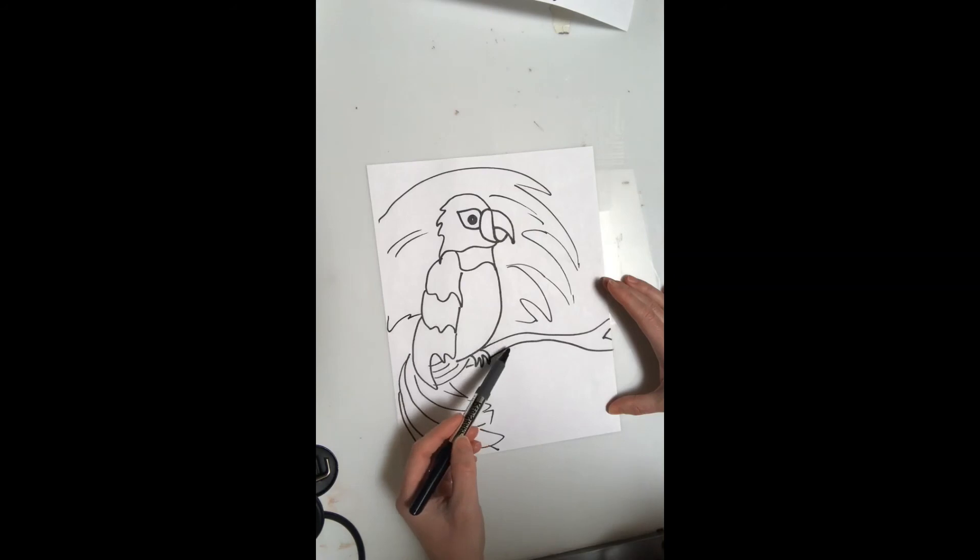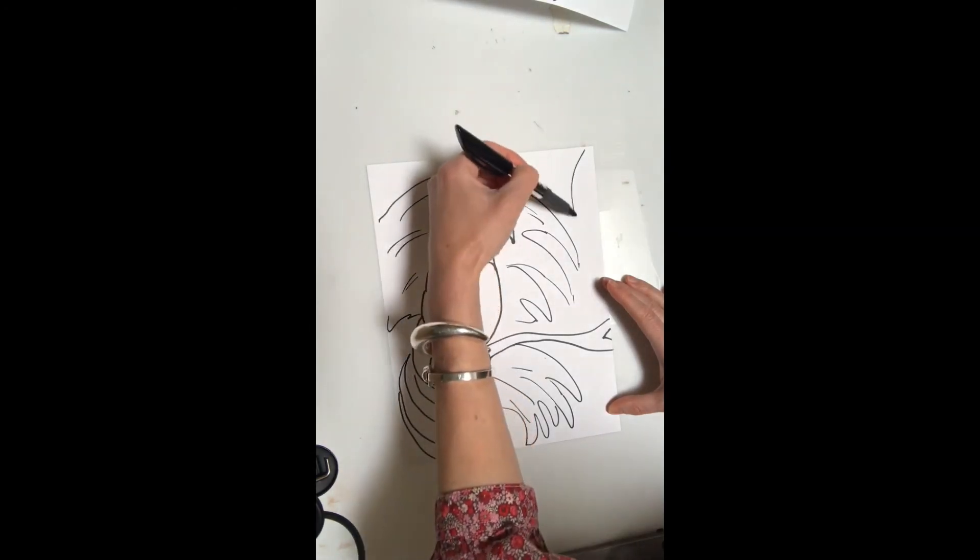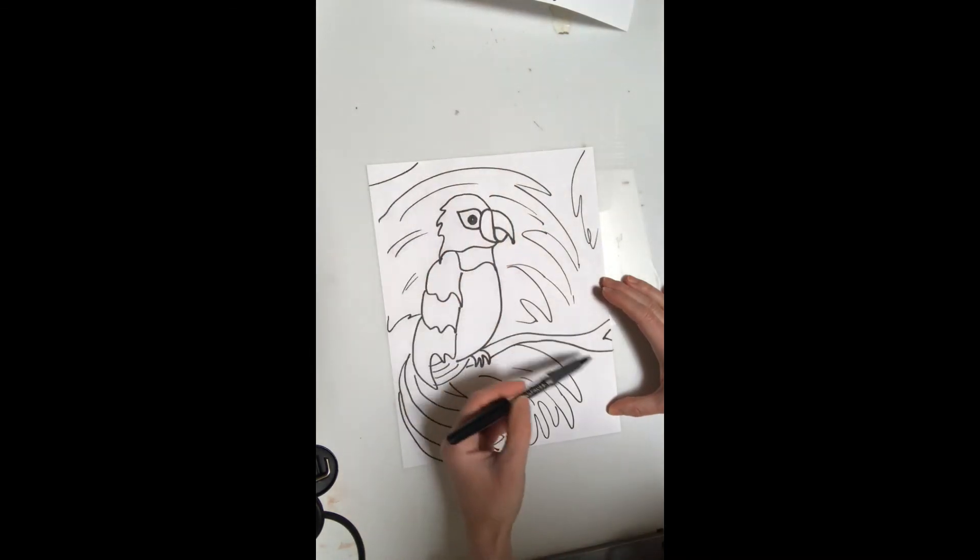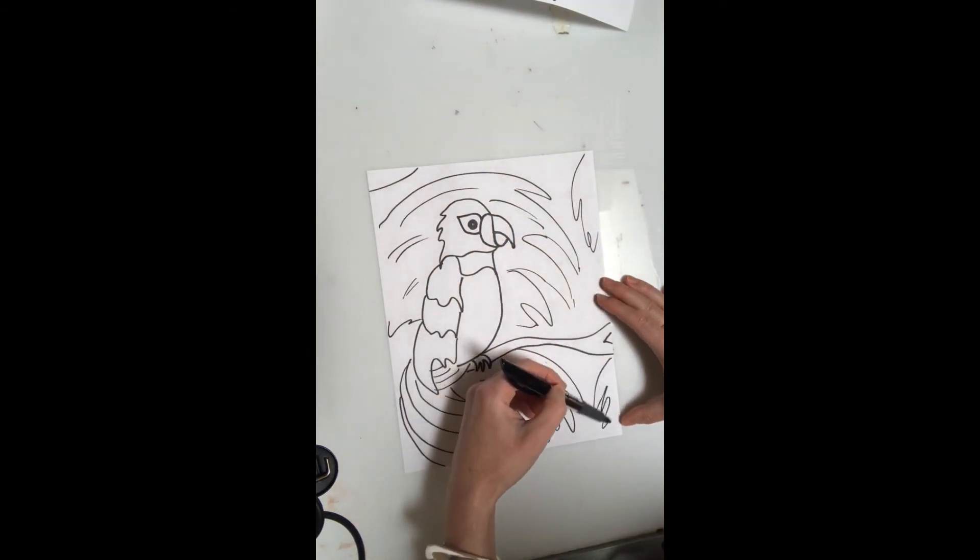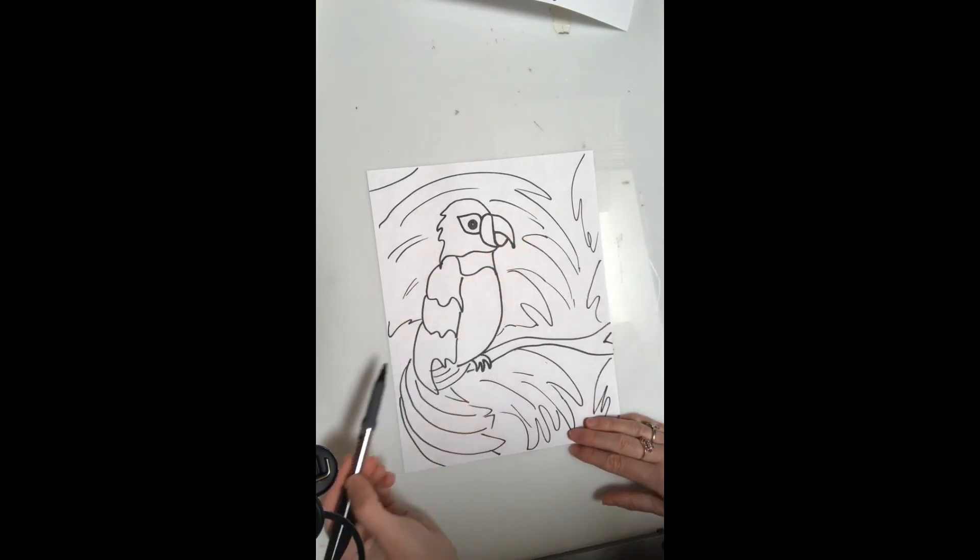I'm just going to make some big leaves here. I'm not being super detailed, just making some nice wavy jagged lines here for foliage. There's no right or wrong way to do this. We're just going to make some shapes for plants and leaves behind your parrot.